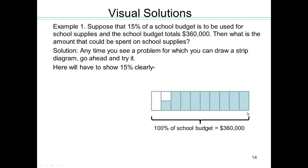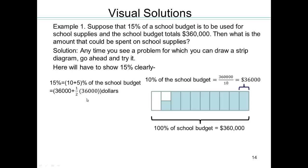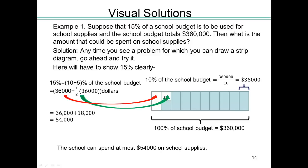So this is 36,000. Then each of this strip is representing 36,000. So for our 15%, then 36,000 is this whole strip. And half of that, which would be 18,000, will be that 5%. So the total we can spend is $54,000 on school supplies.